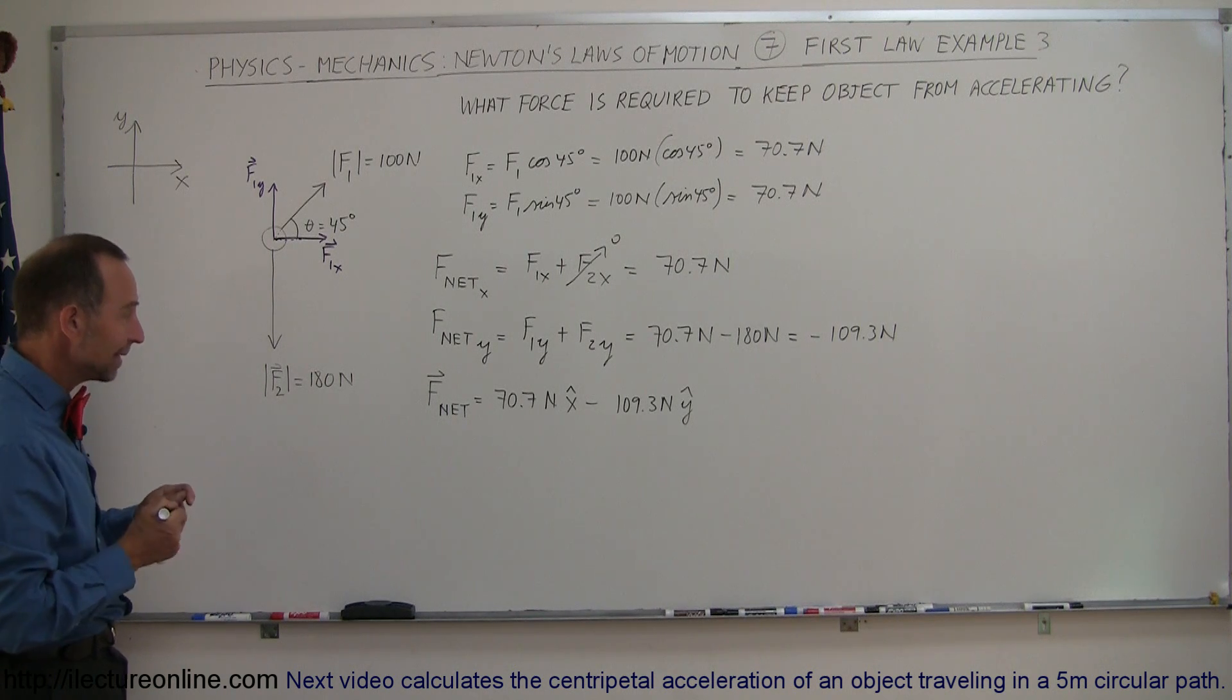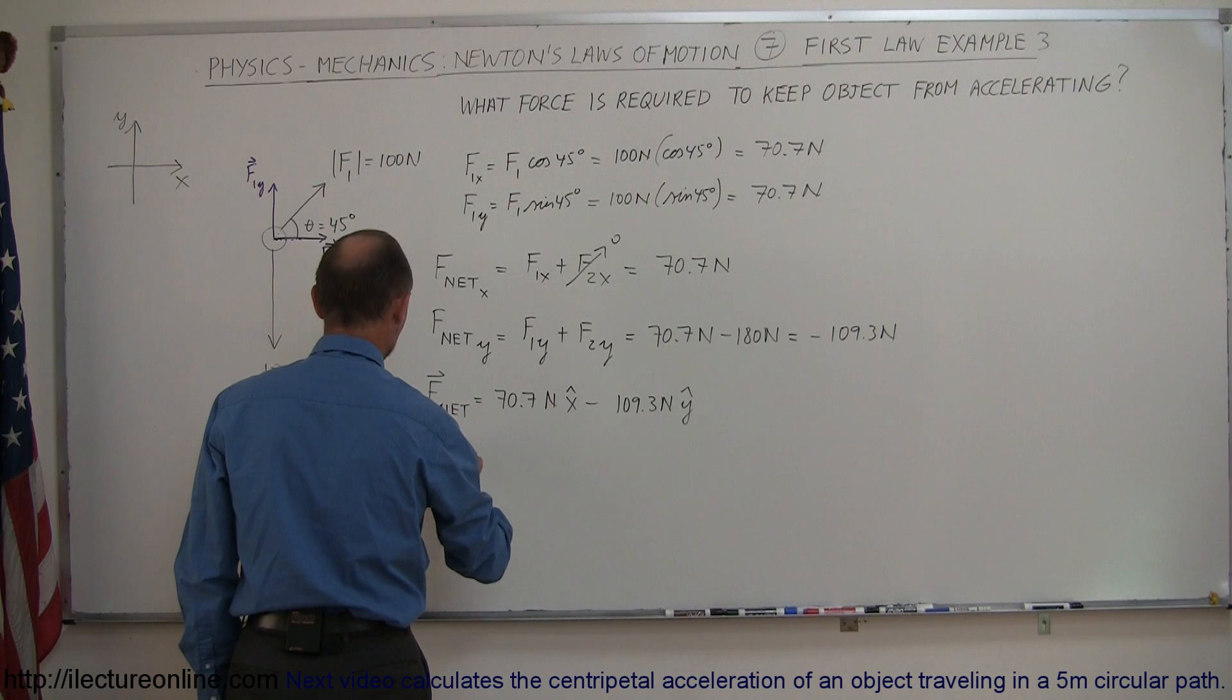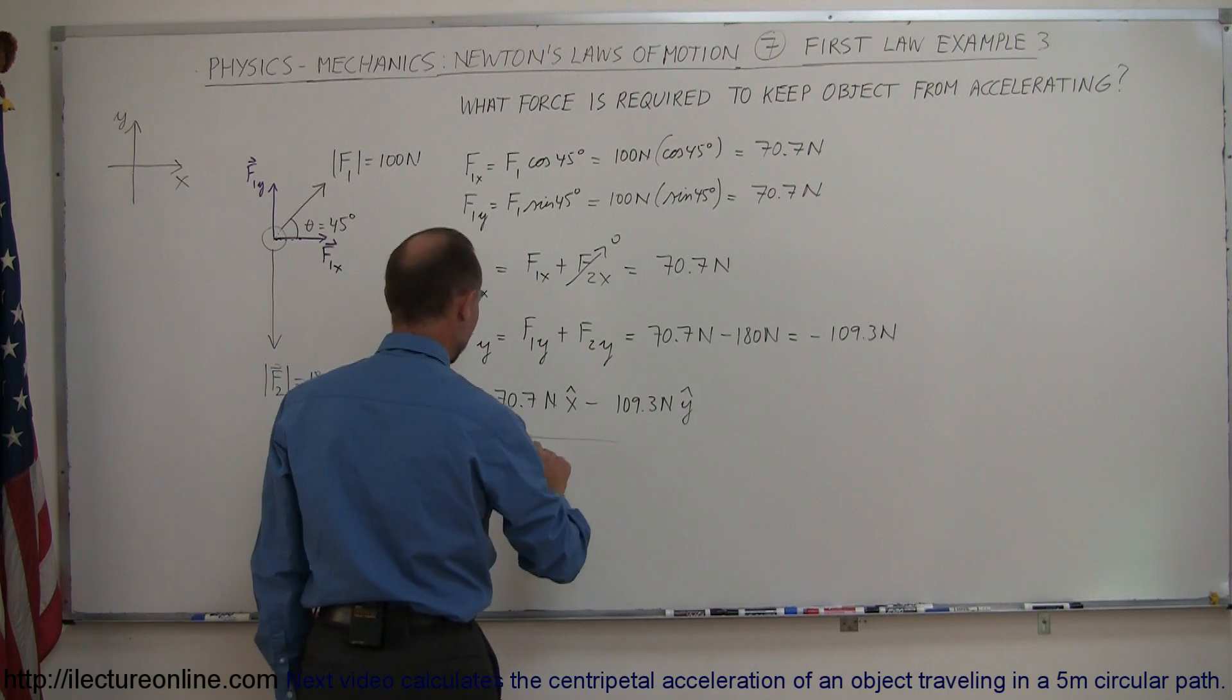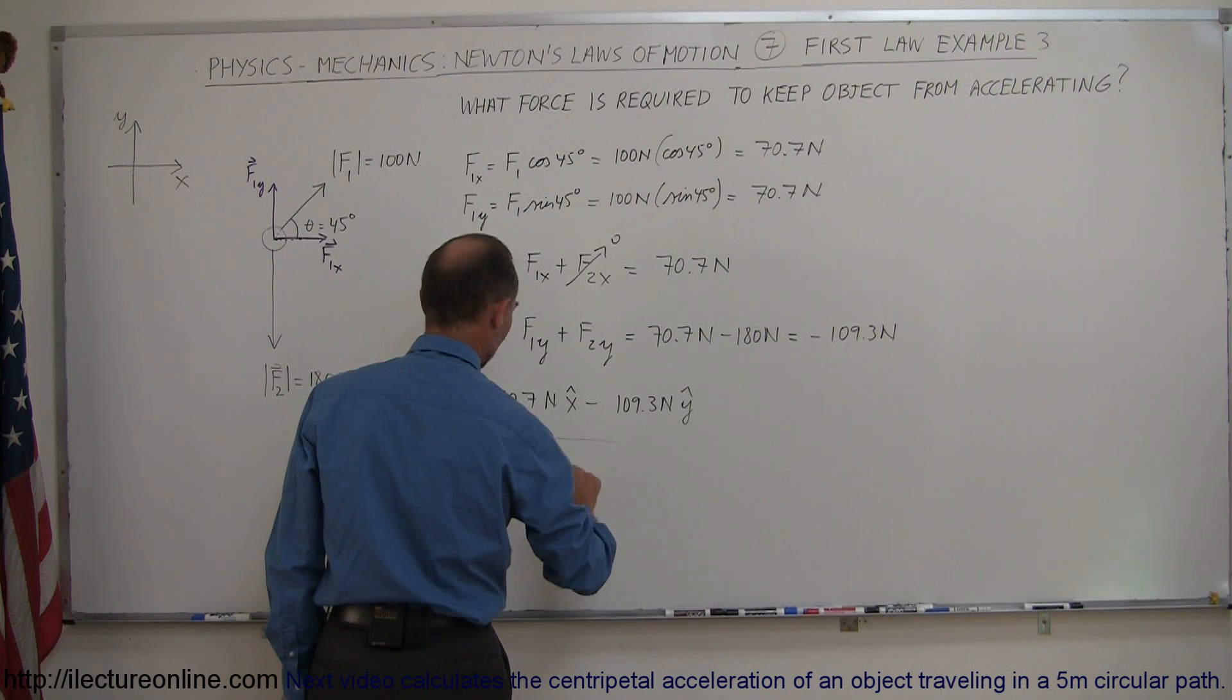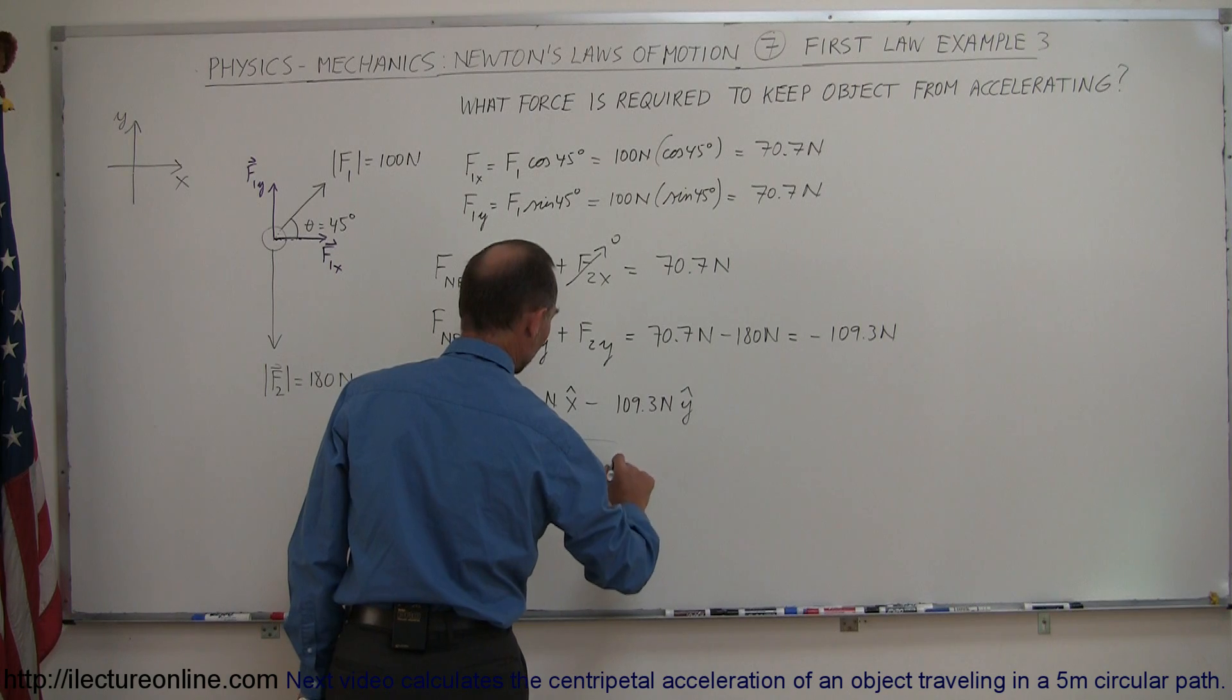So if I now want to find the magnitude of that force, so we say that the magnitude of F net is equal to the square root of the F net in the X direction squared plus F net in the Y direction squared.